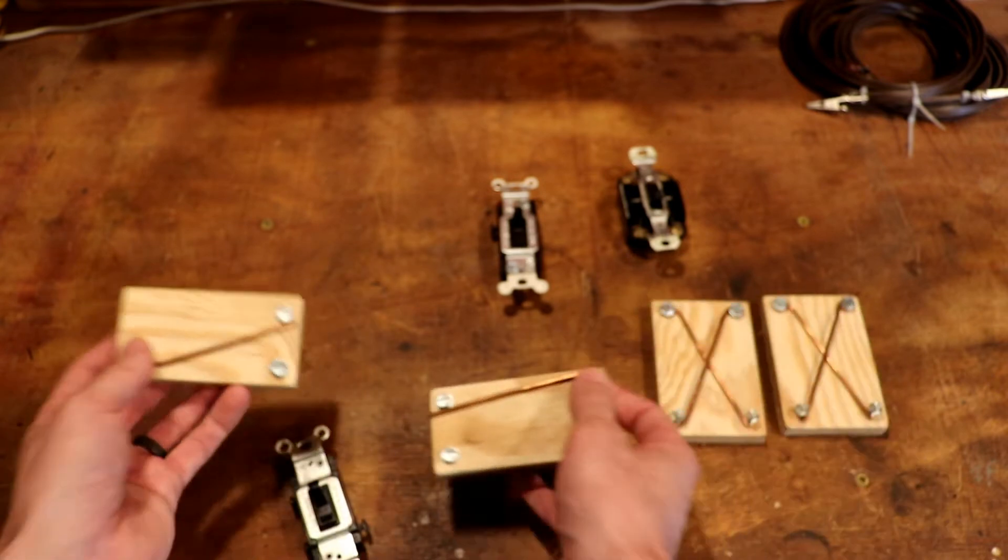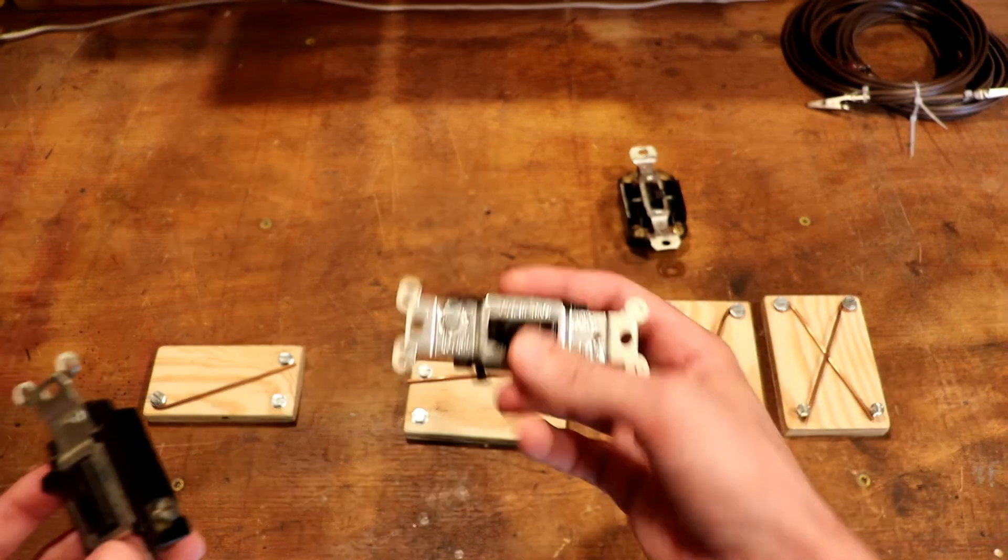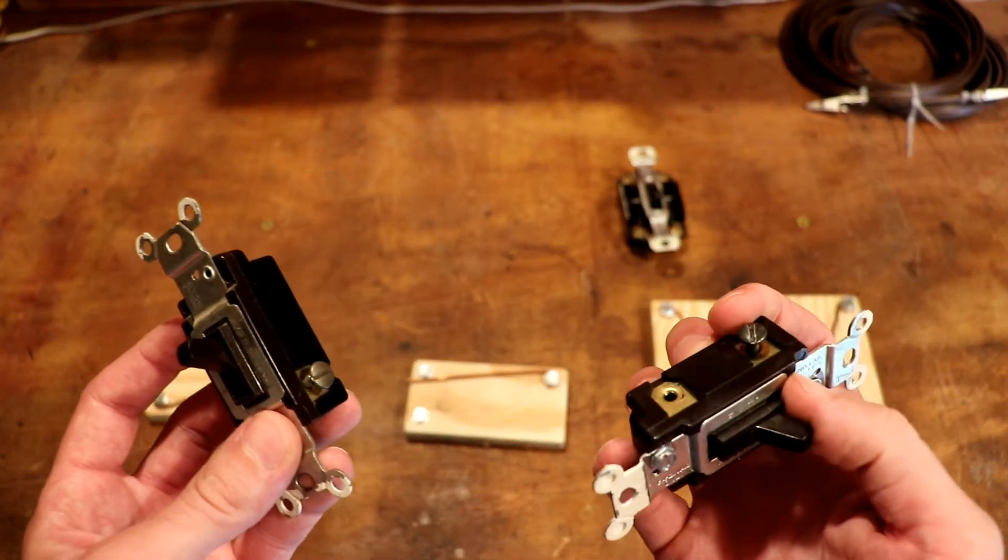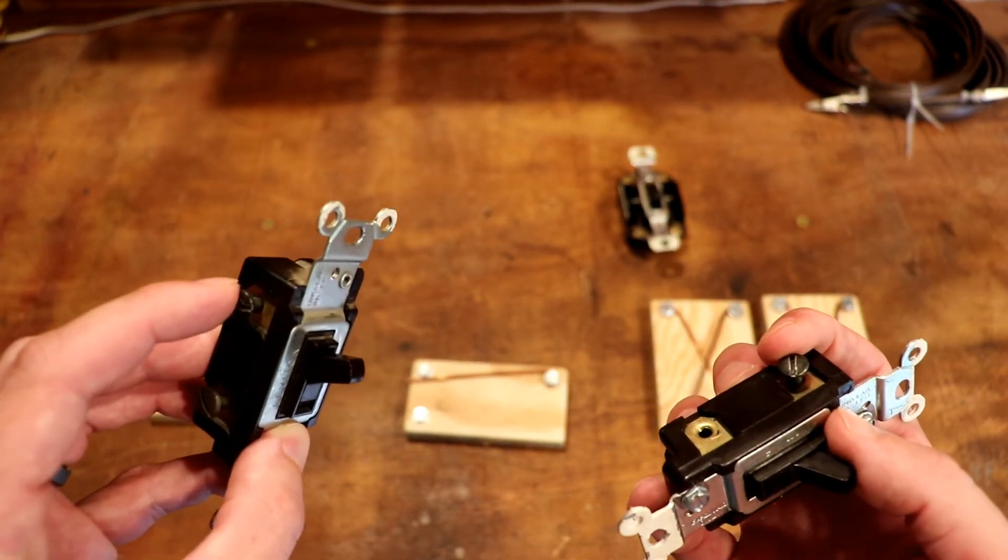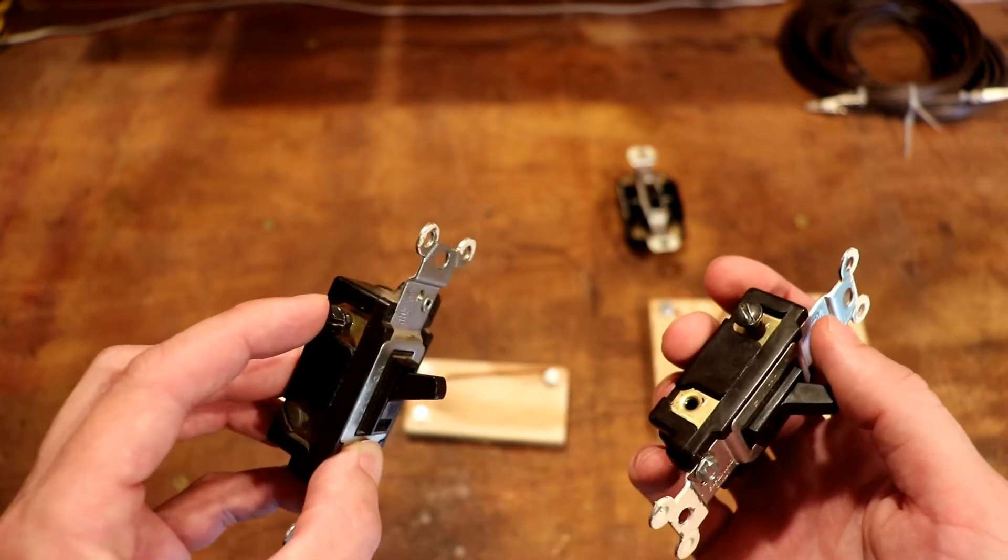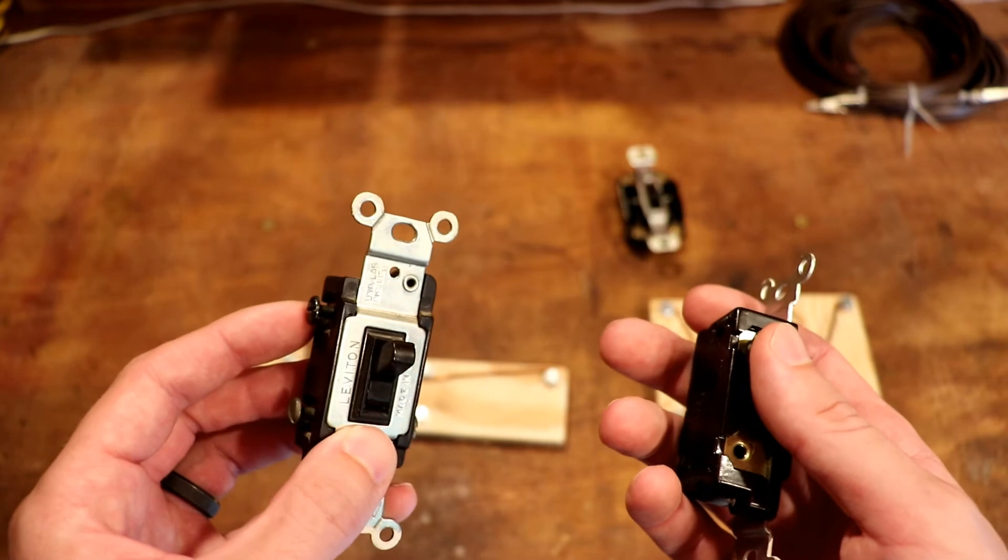Remember that the common lugs, again, this one up here, one switch, on one switch, the common lug is going to be power in, and on the other switch, the common lug is going to feed power out to your light. Now, which one is which is not going to be intuitive without a little bit further troubleshooting. Let's dig into that now.